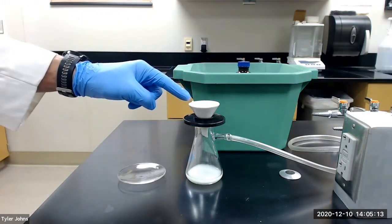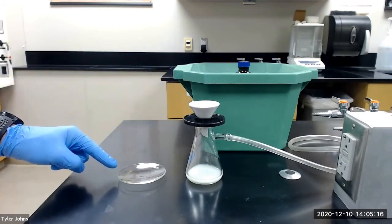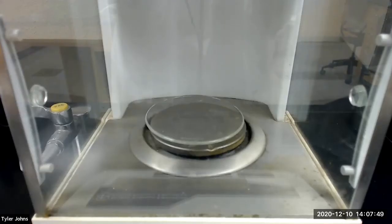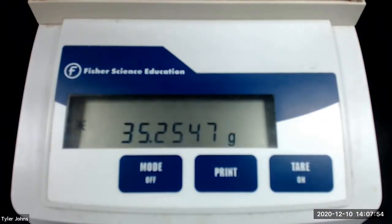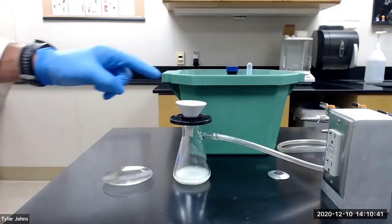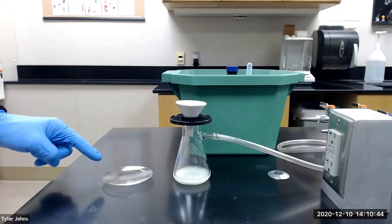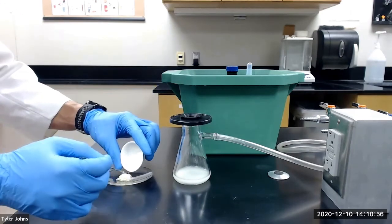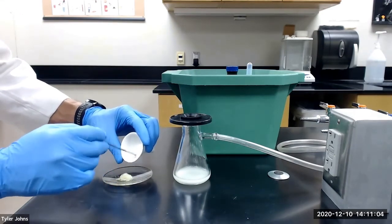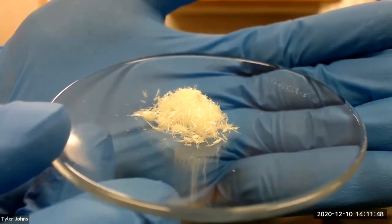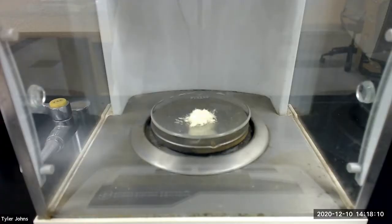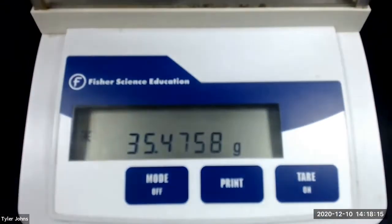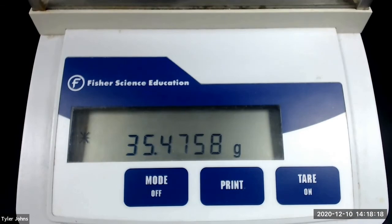While the purified benzil crystals continue to dry, we will next pre-weigh a watch glass. The mass of the pre-weighed watch glass is 35.2547 grams. We will next collect the purified benzil crystals on the pre-weighed watch glass. The mass of the pre-weighed watch glass and the purified benzil crystals is 35.4758 grams.